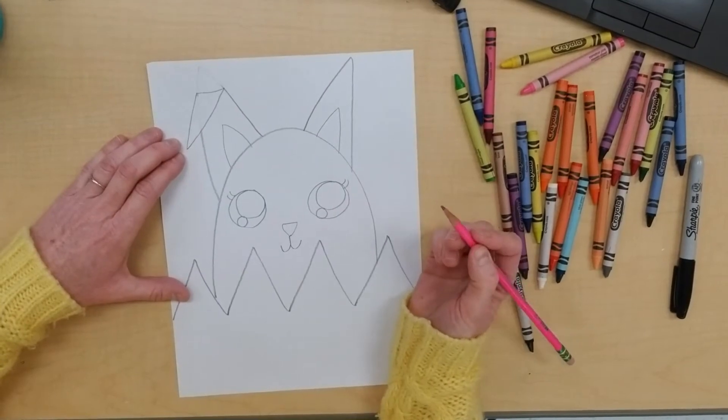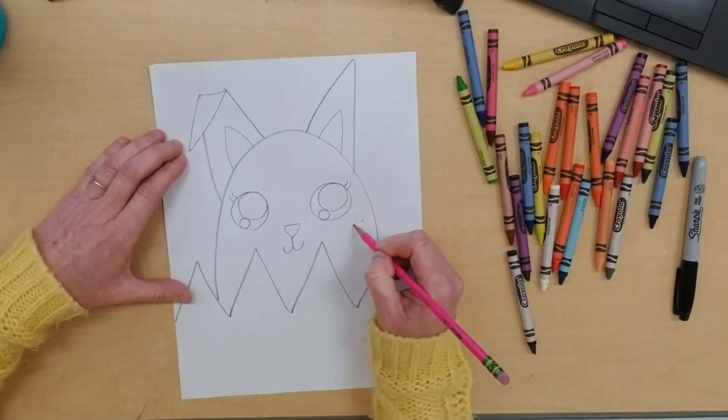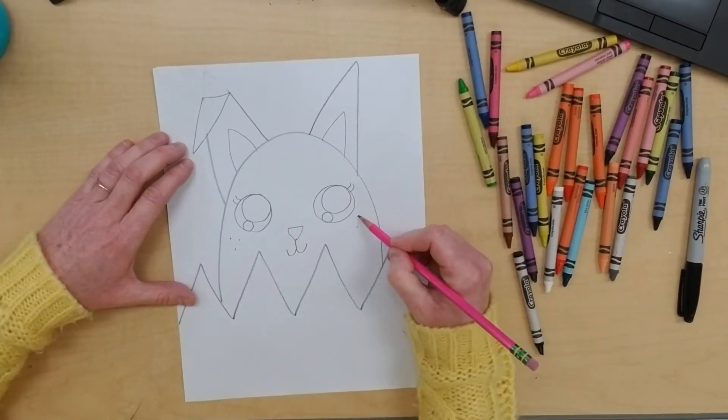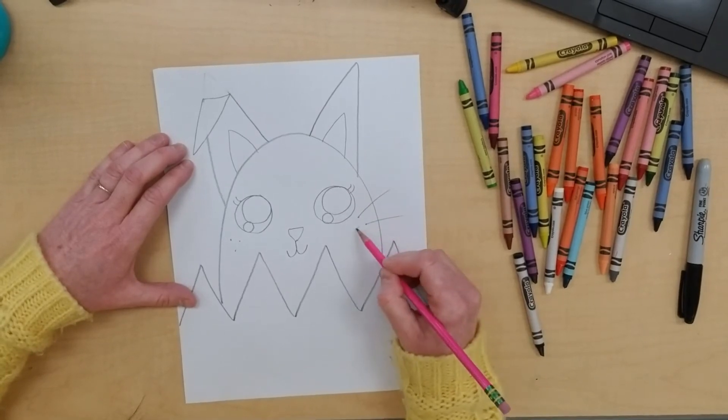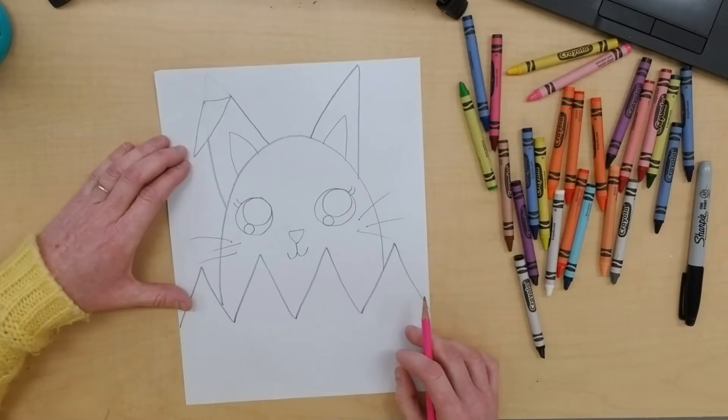All right, our bunny needs some whiskers. So over on the cheeks, just put three little freckles: one, two, three, one, two, three. And then draw three lines from the freckles: one, two, three, one, two, three. All right, your cute